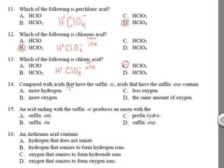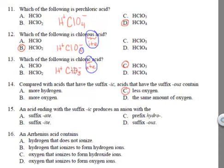Compared with acids that have the suffix -ic, acids with the suffix -us contain less oxygen. If you look at chlorous acid — ending with the suffix -us, polyatomic ending -ite — you have two oxygens, whereas chloric acid — polyatomic ion chlorate — has three oxygens.